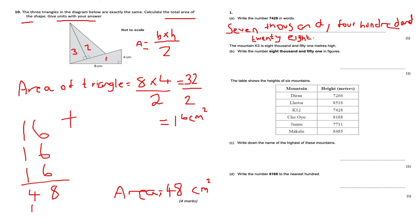The amount in K3 is 8,051 metres high — write 8,051 in figures. I was already writing it as I read the question: 8,051.